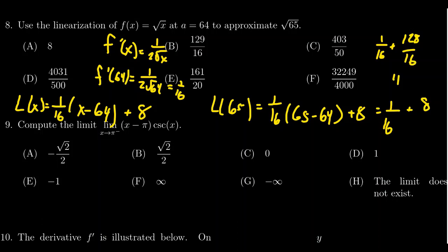Adding those together, the correct answer is B: 129/16. That's the estimate of √65 given by this linearization method.